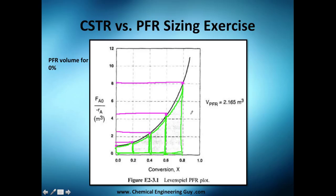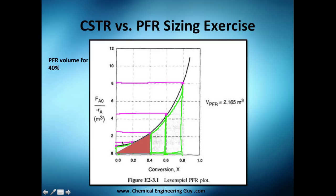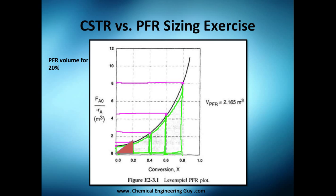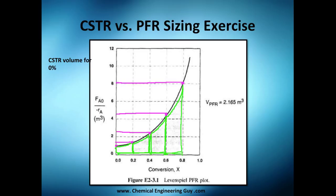Numbers are great, but let's do this more graphically. For the PFR at 0% conversion you have nothing. At 20% you get this area here, at 40%, 60%, and 80% the total PFR volume corresponds to the area under the Fa0/-rA curve up to that conversion.